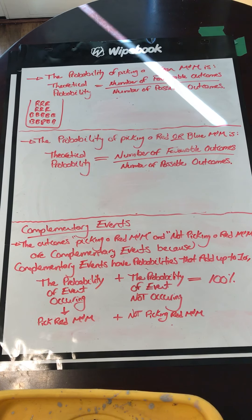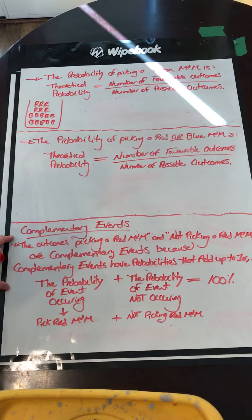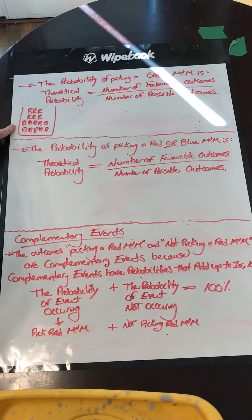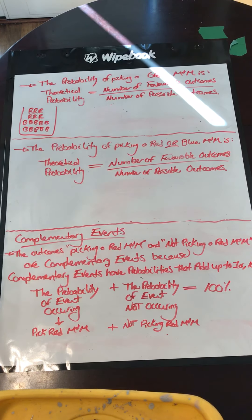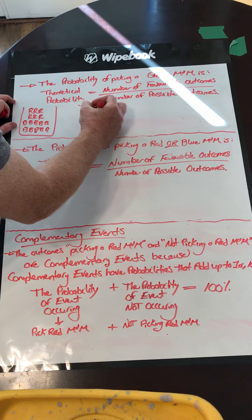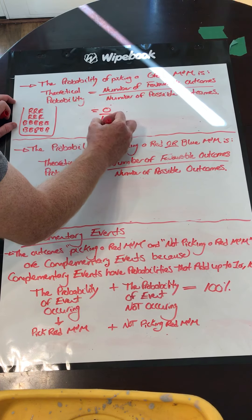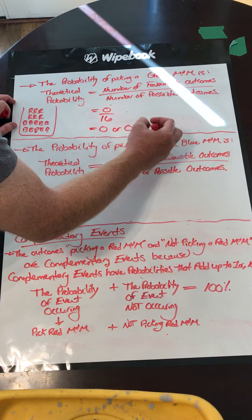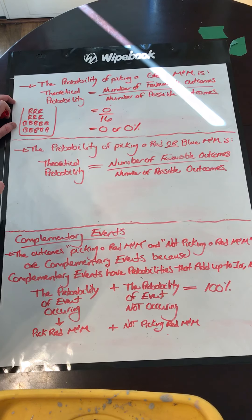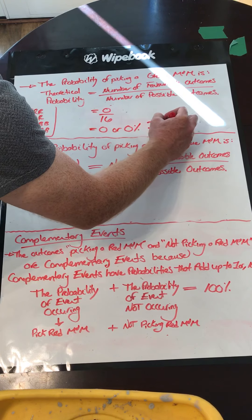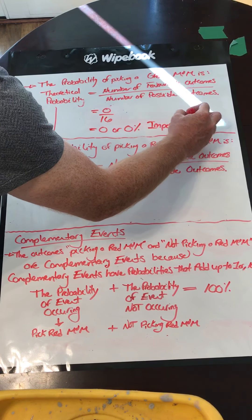Now we are going to find the probability of picking a green M&M. I've re-sketched my bag and I look in the bag and there are no greens. So the number of favorable outcomes for green is 0 divided by 16, which is equal to 0 or 0% chance. So the probability of picking a green M&M is impossible — it cannot happen.